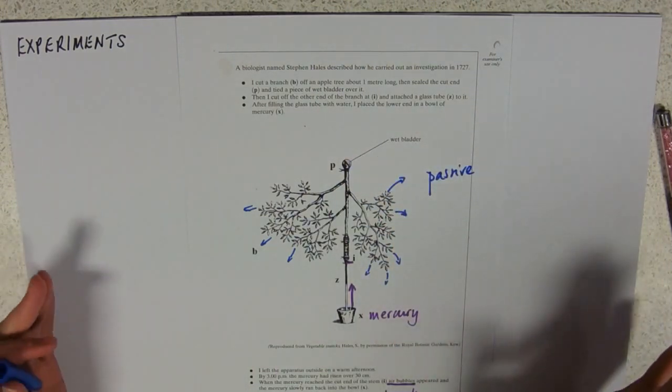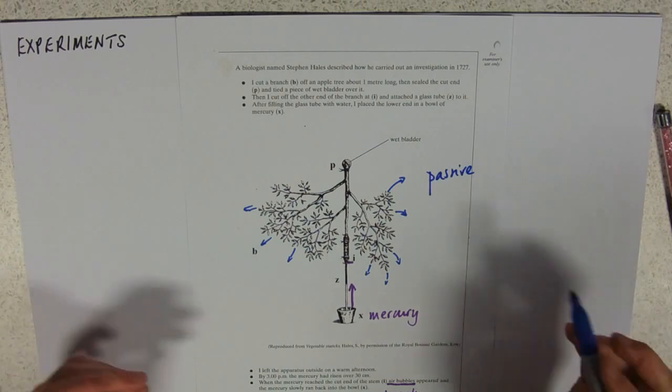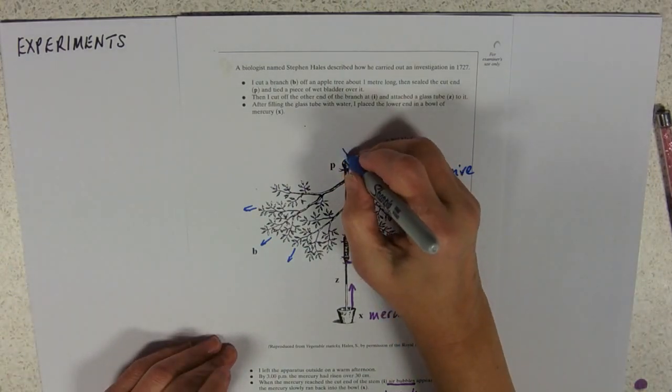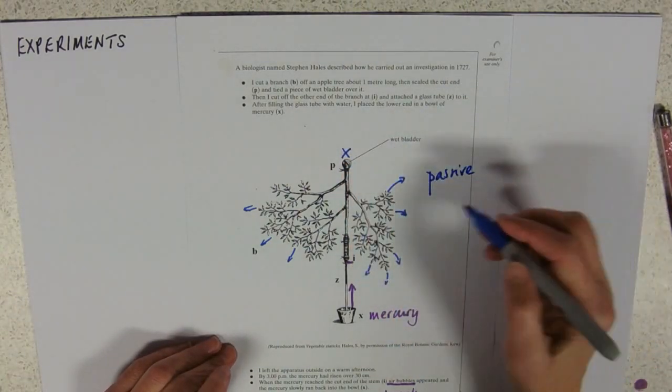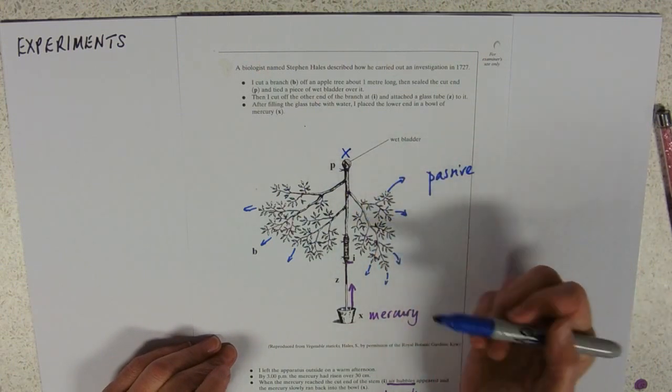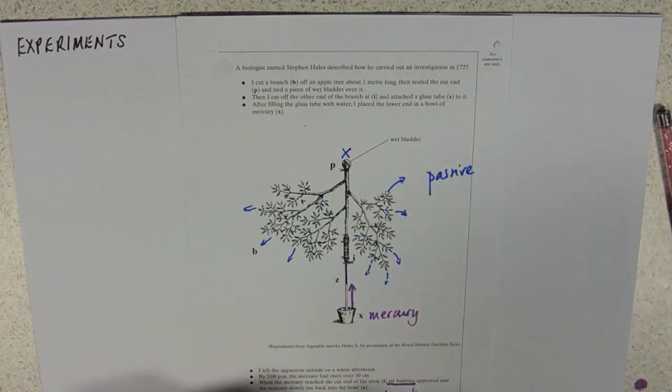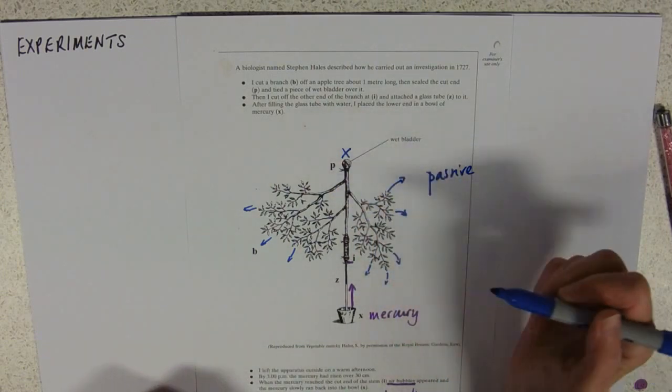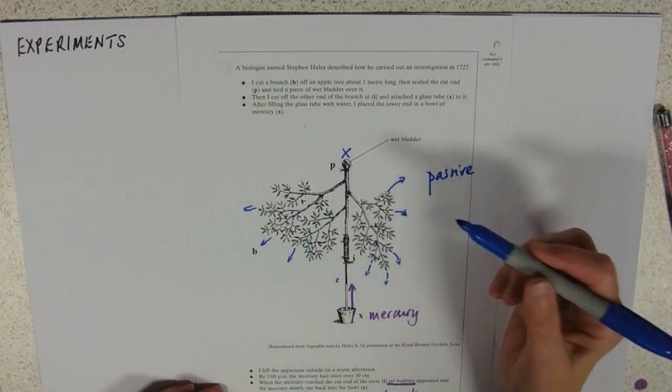Obviously, the root end of the plant will be there. It will go in either direction, but it couldn't, the water couldn't get out of there, because of this sealing up of that end of the tree trunk, of the branch.